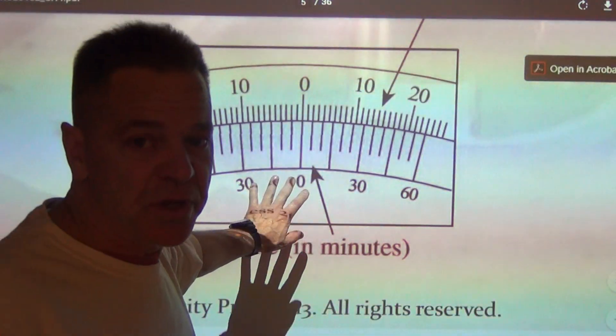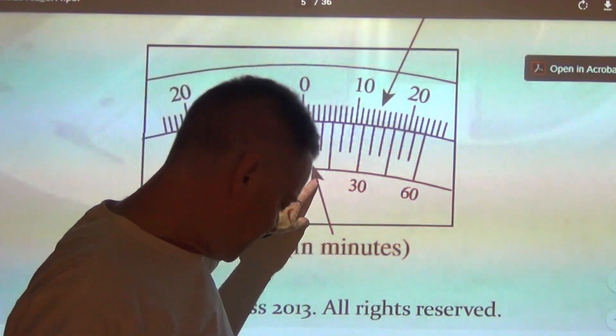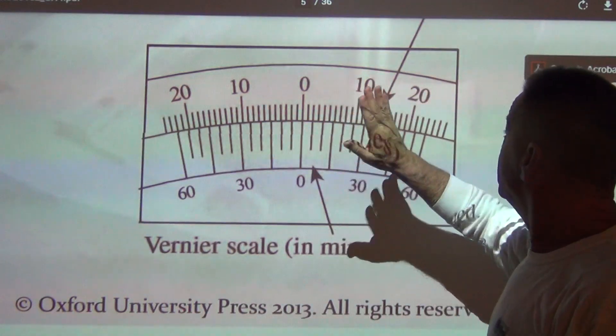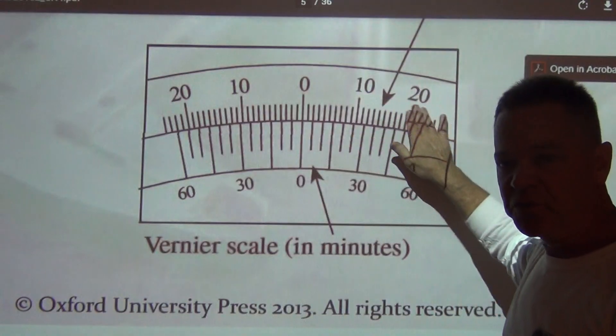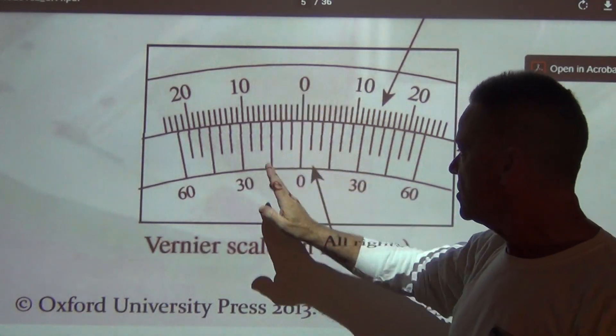When you look at this vernier scale here, you can see that we have, and now just to be clear, this is the main scale up here. These are whole degrees. Here's a zero mark.